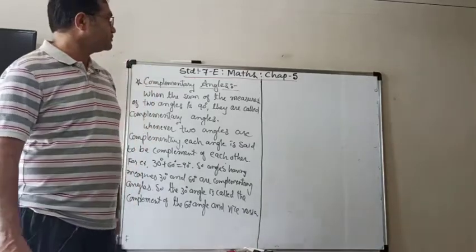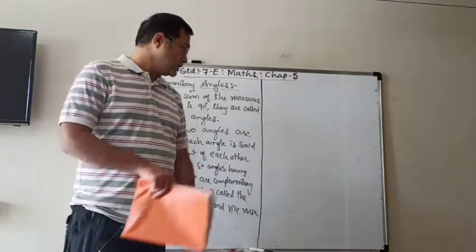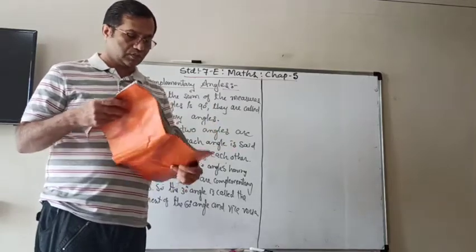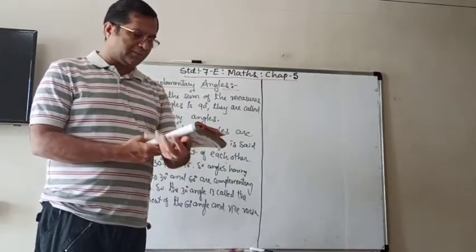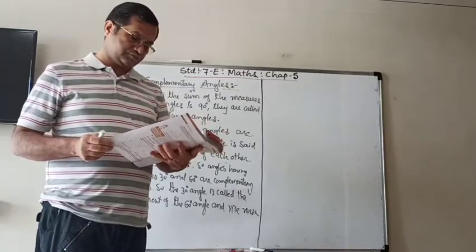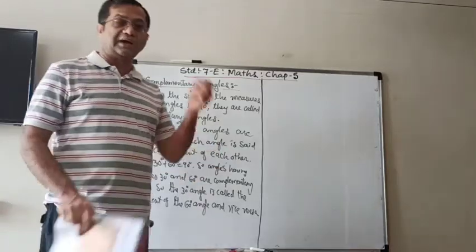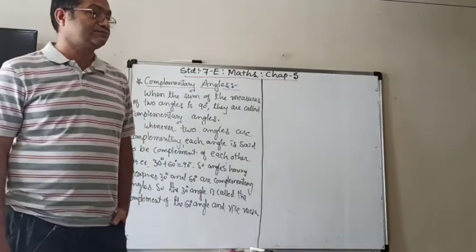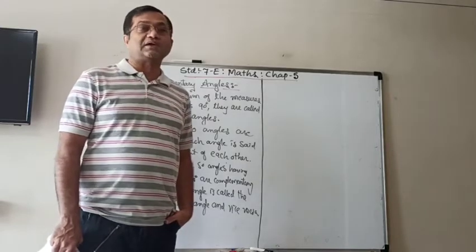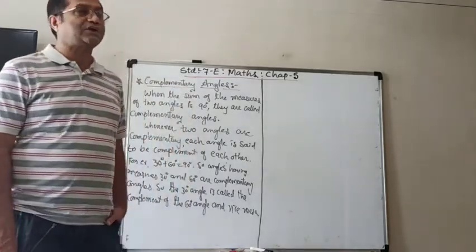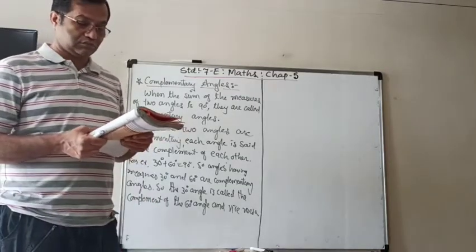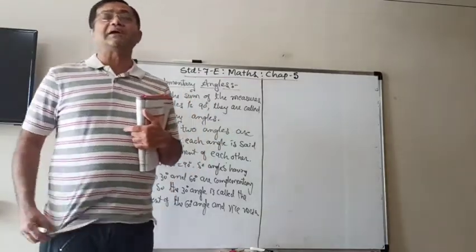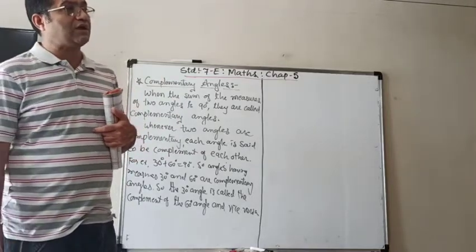Hello students, standard seventh in maths, chapter number five: lines and angles. In the last video we learned about line segments, line rays, and also how the angles are formed, and the types of angles like acute angles, obtuse angles, right angles, etc. Now some angles are related to each other, so now we have to learn about the related angles.